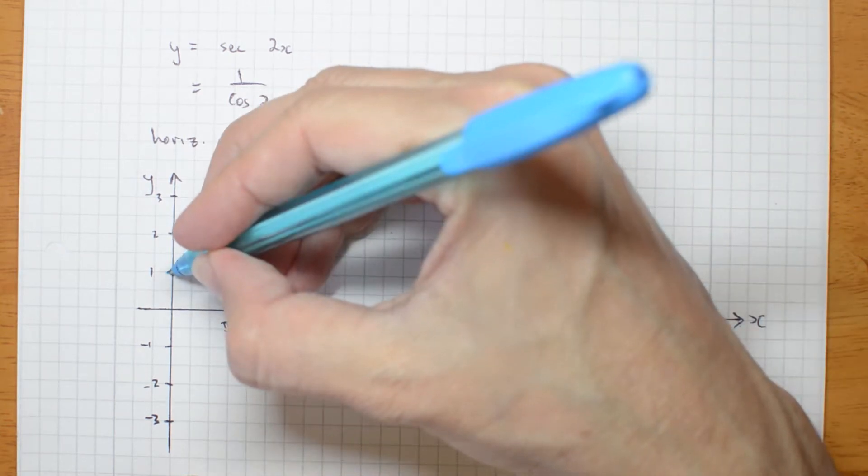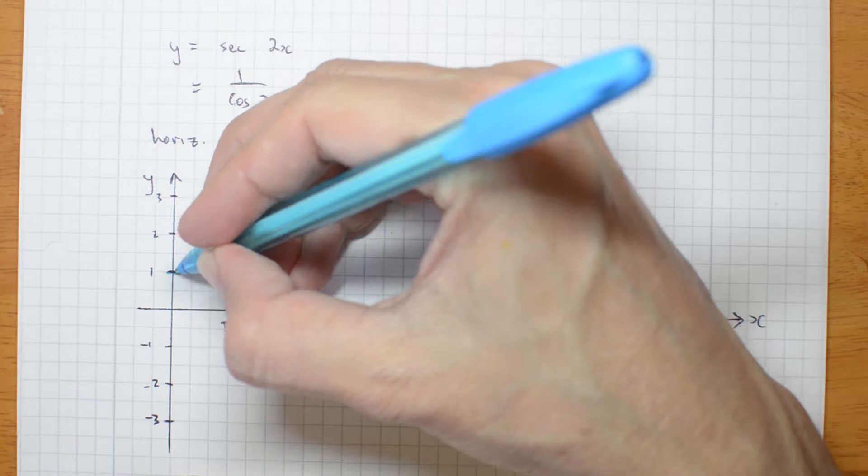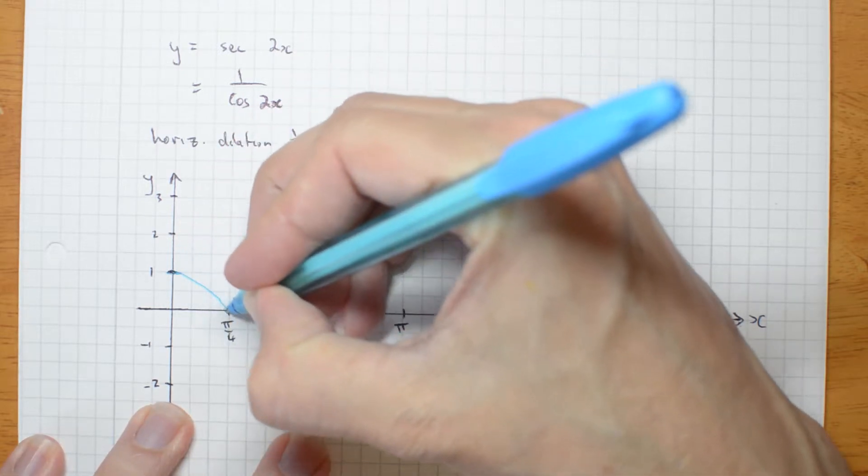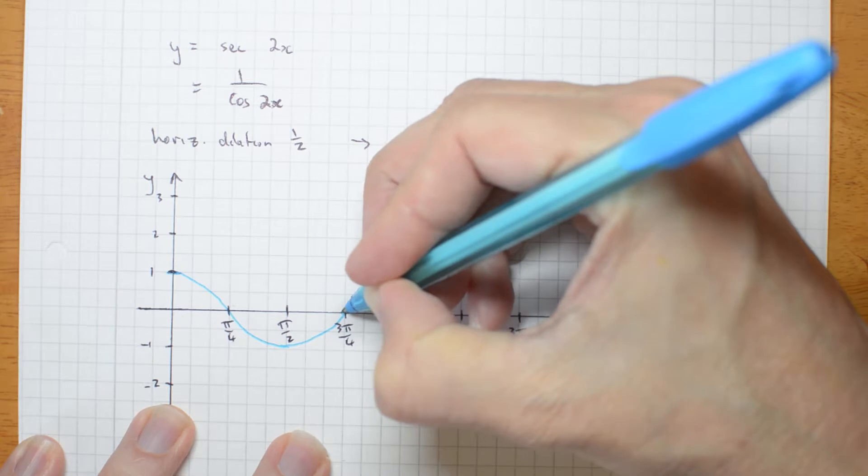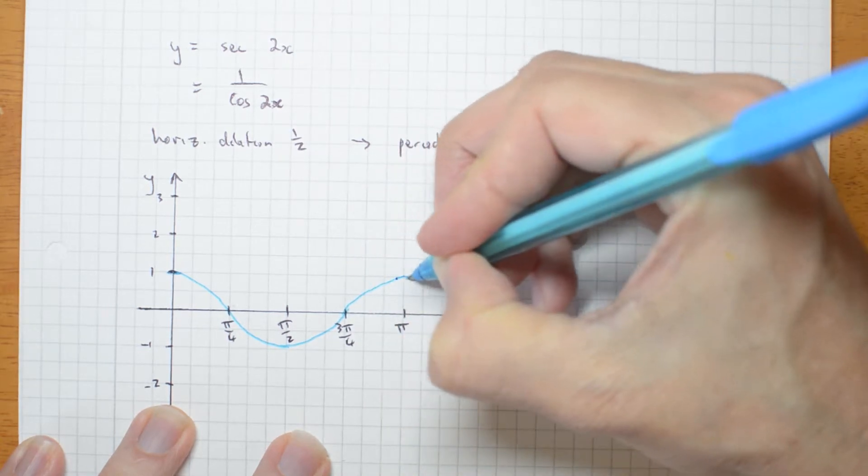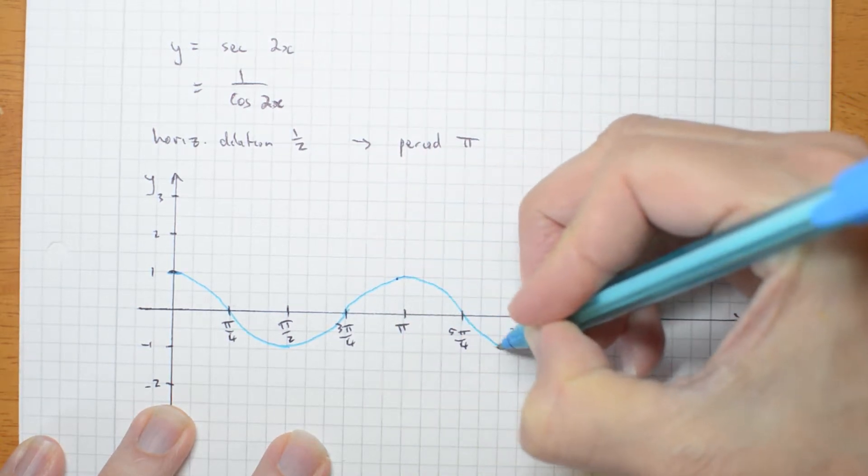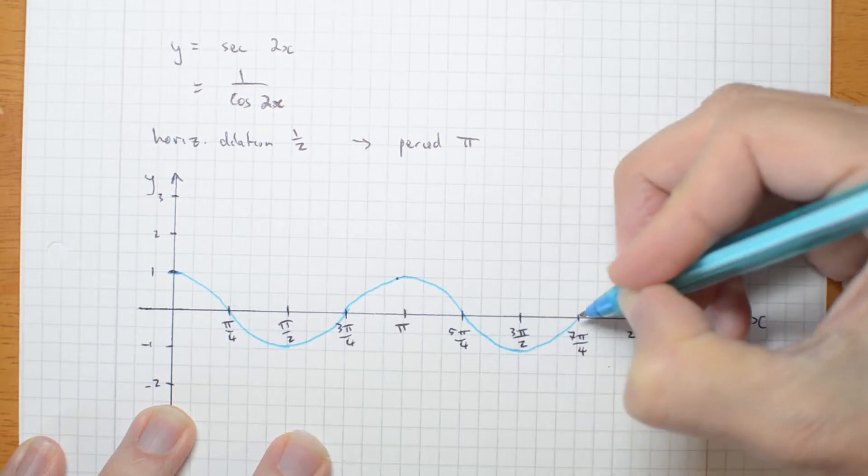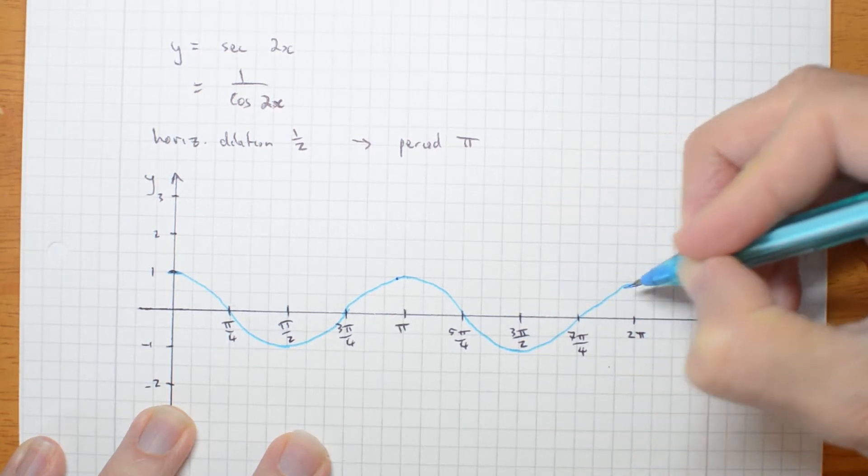So it's going to come down here, and it's going to come through here to there, back up here, period of π, back down through here to there, back up through there to 2π.